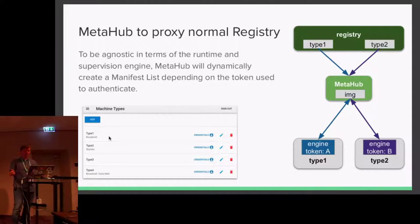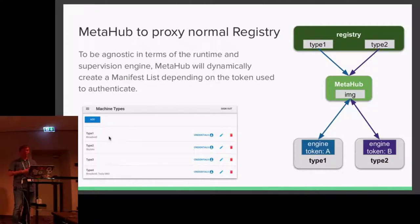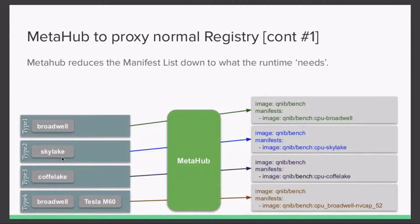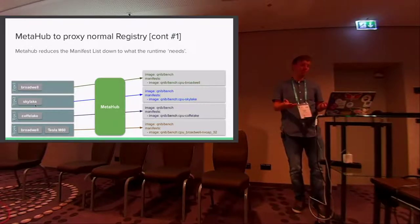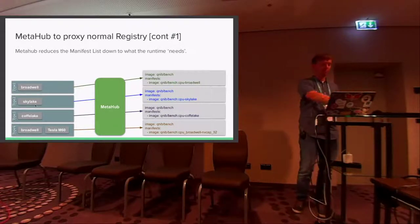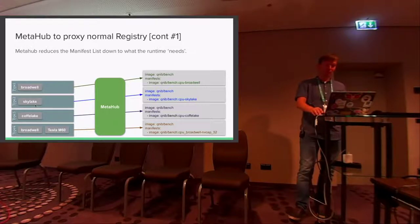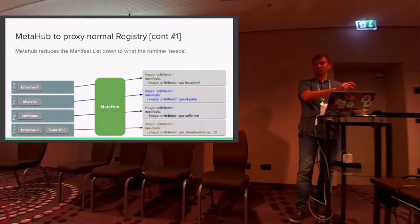In MetaHub you can define different machine types. You could say type 1 is a Broadwell system, type 2 is Skylake, type 4 has a Broadwell and a Tesla M60. You create different credentials for the engine to log into MetaHub. Type 1 will log in as type 1 and type 2 will log in as type 2, so MetaHub can differentiate the two hosts and serve the correct image for each host. MetaHub trims down the manifest list using the features to figure out what the runtime needs, serving the Broadwell image to type 1 and Skylake to type 2.